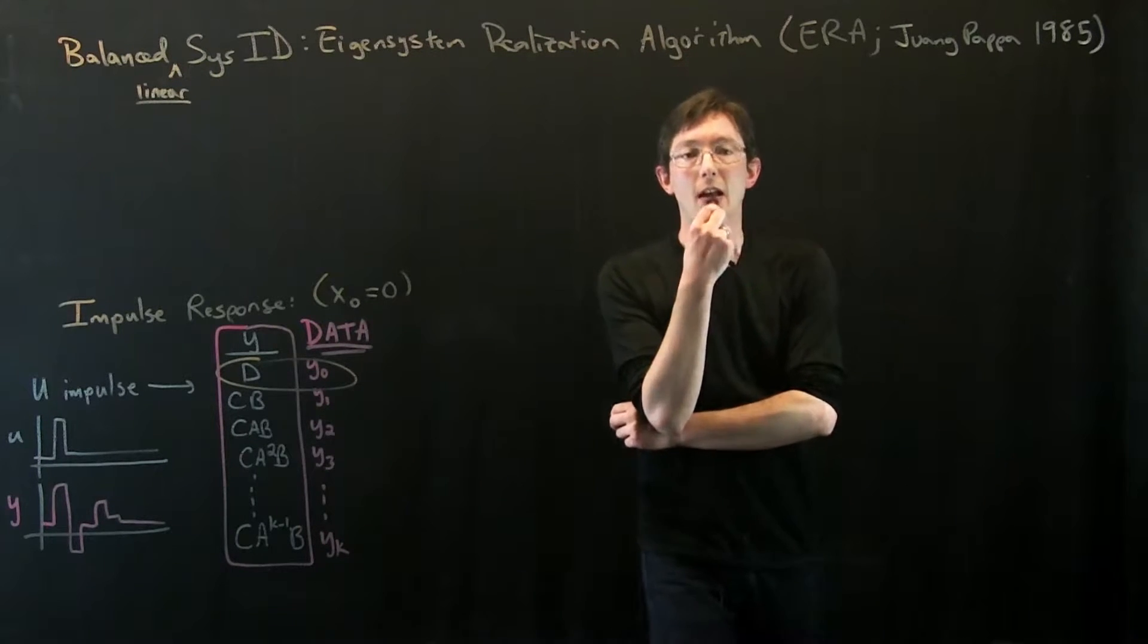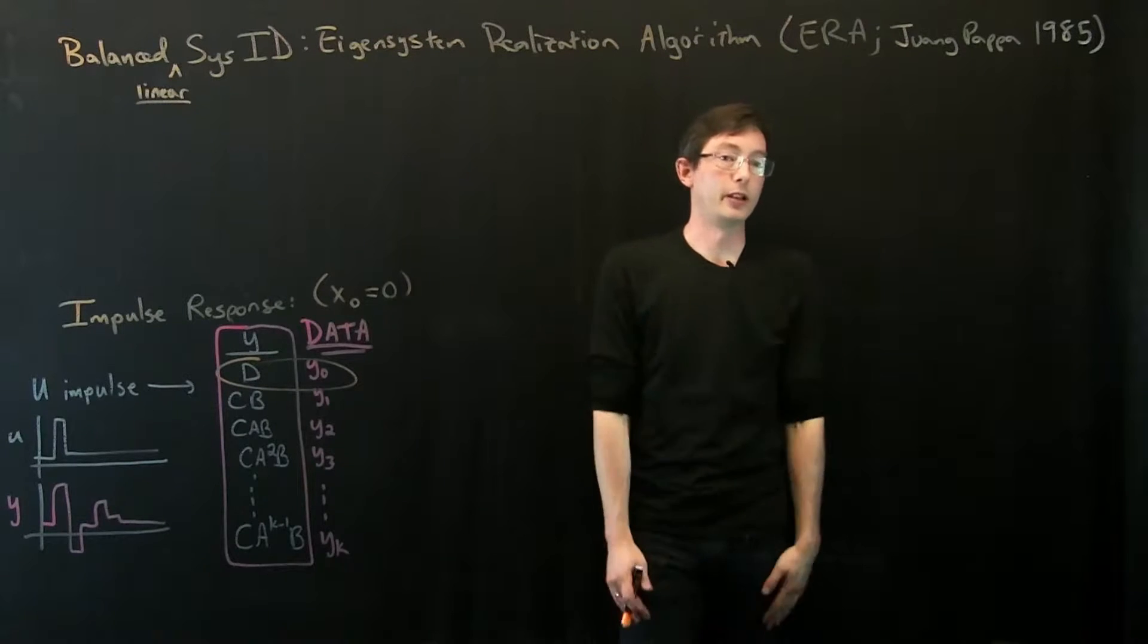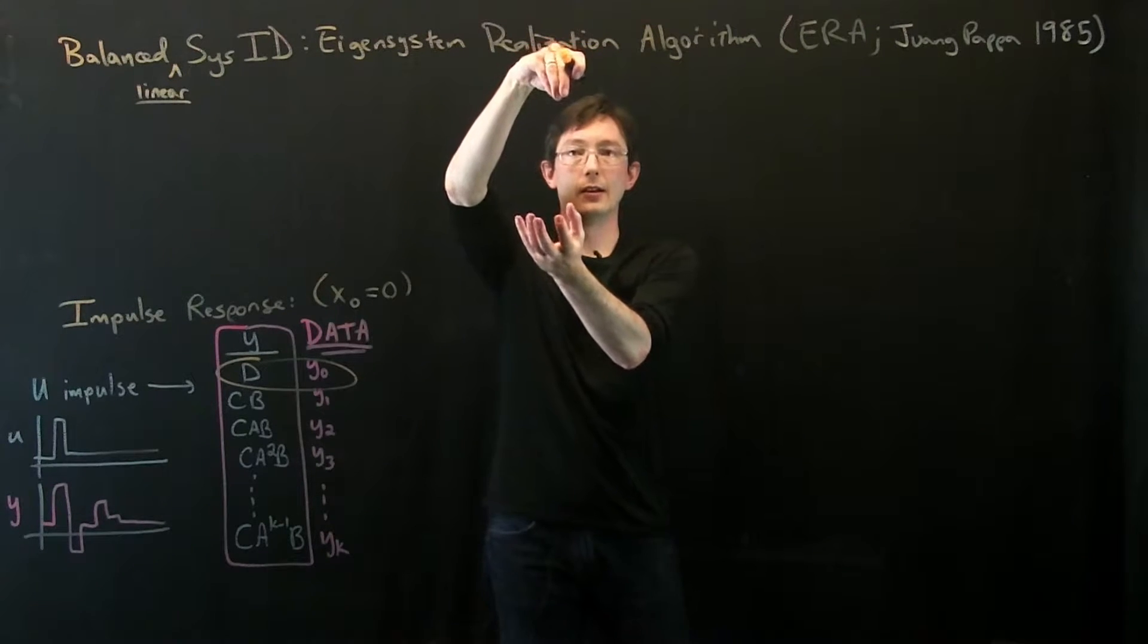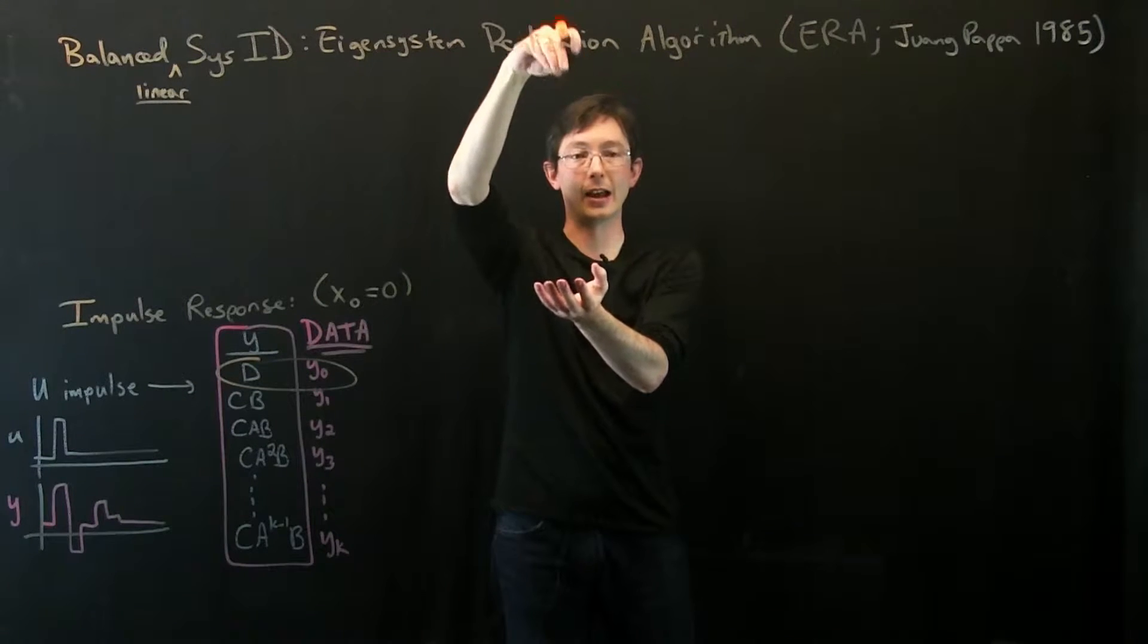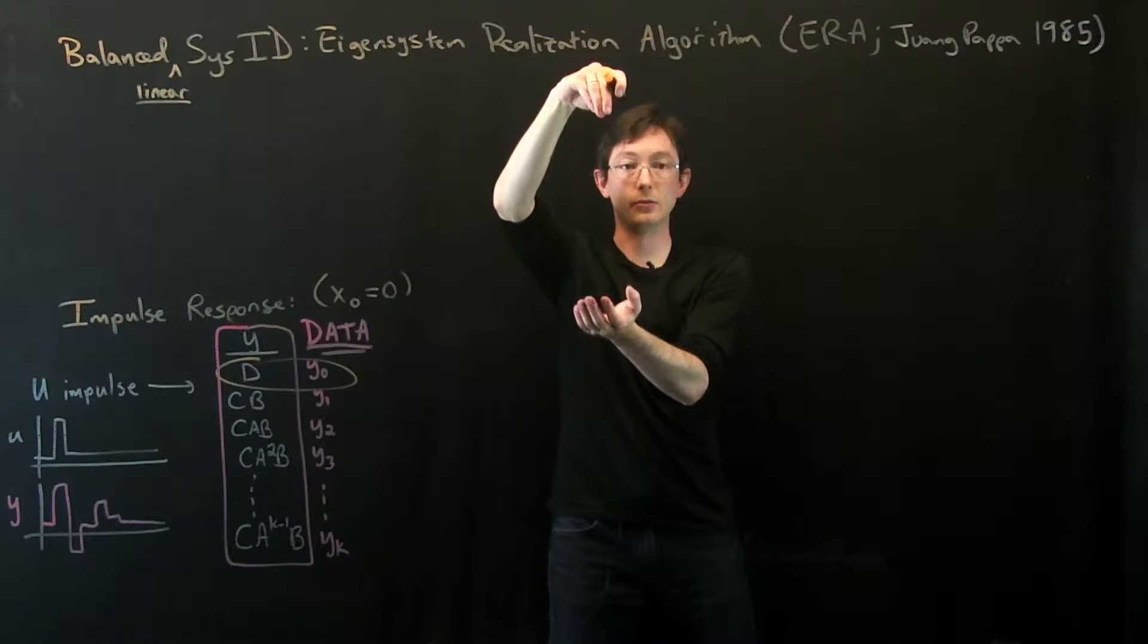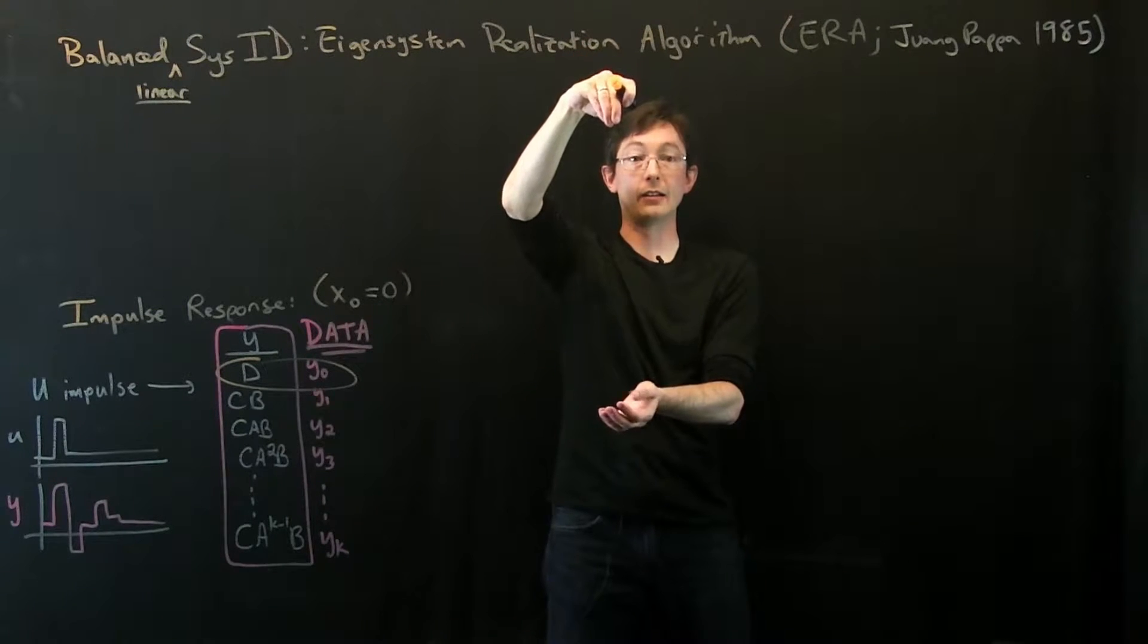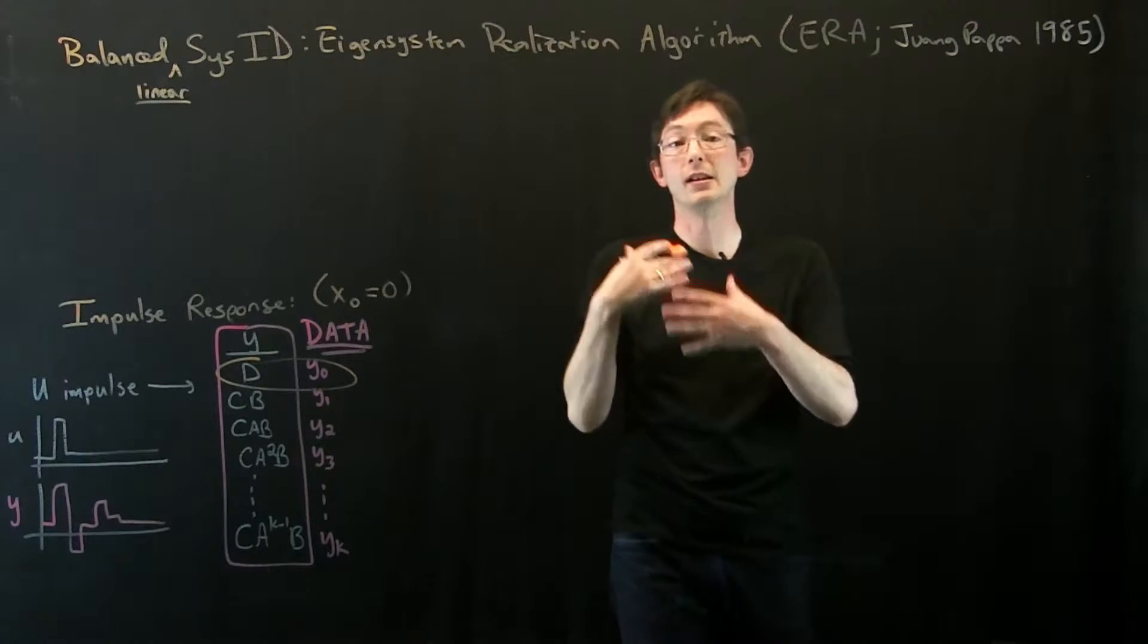So how would you get an impulse response for a system you care about? Let's say I have a mass on a spring and I want to give this thing... I can move the base. An impulse response might be just to jerk your hand up and down as fast as possible or build a motor to do that. You can build an impulse response for that super simple system.